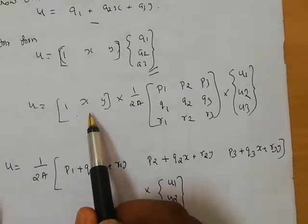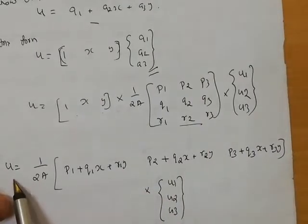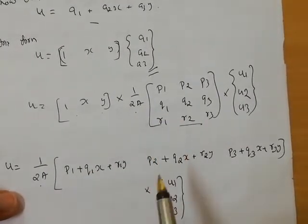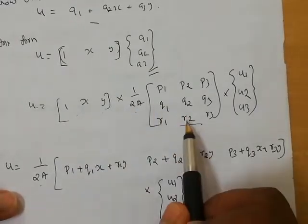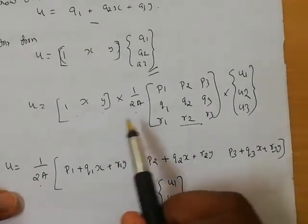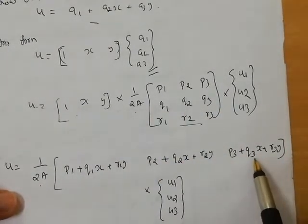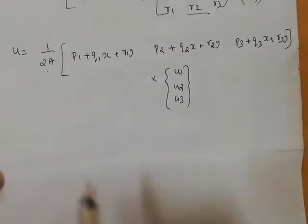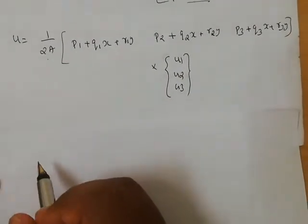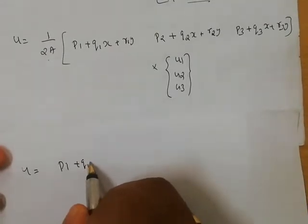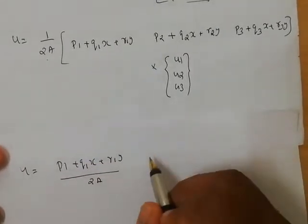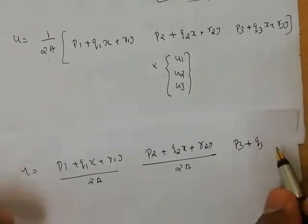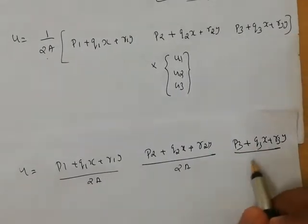Expanding, U is equal to 1/2A times [(P1 + Q1*x + R1*y)*U1 + (P2 + Q2*x + R2*y)*U2 + (P3 + Q3*x + R3*y)*U3]. So U = [(P1 + Q1*x + R1*y)/2A]*U1 + [(P2 + Q2*x + R2*y)/2A]*U2 + [(P3 + Q3*x + R3*y)/2A]*U3.